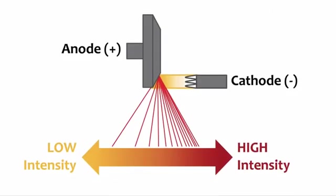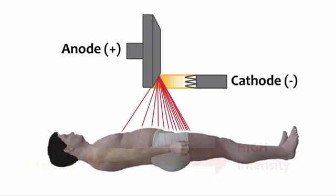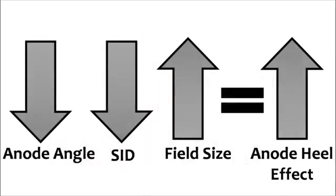In summary, the anode heel effect is the change in beam intensity across the length of the x-ray field. Specifically, the anode side has fewer photons and the cathode side has more photons — the anode side is weaker and the cathode side is stronger. Remember that the anode heel effect can be used to our advantage by placing the thinnest portion of the patient under the anode side and the thickest portion under the cathode side. Finally, three changes can increase the anode heel effect: decreased anode angle, decreased SID, and increased field size.